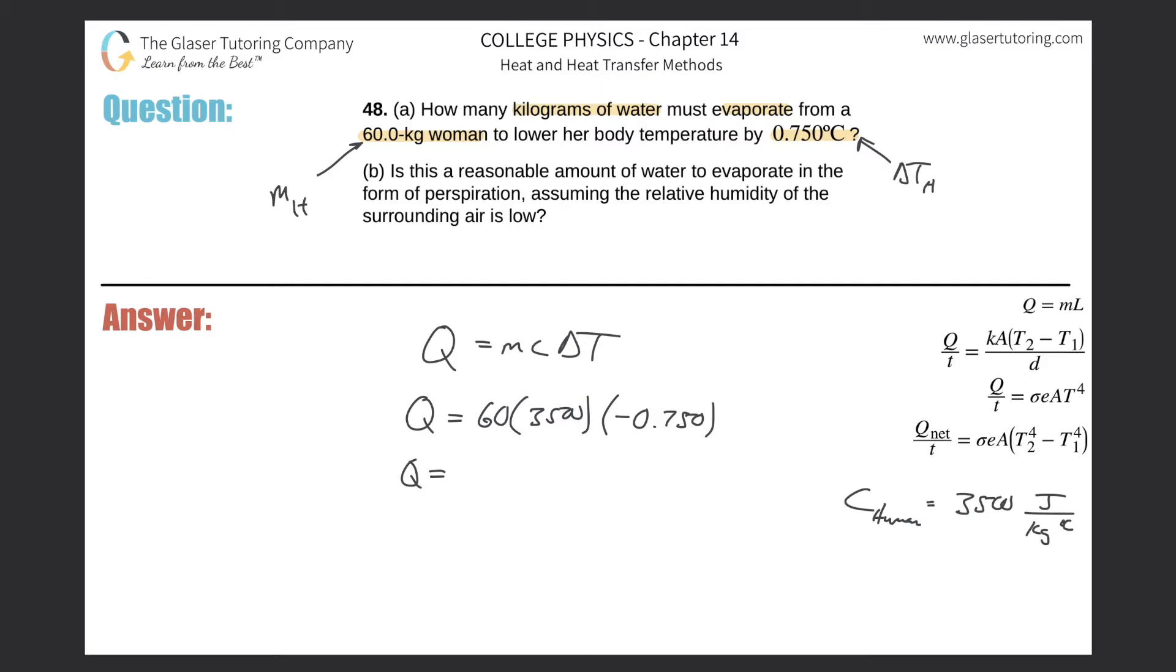So 60 times 3,500 times negative 0.75, just like there's no such thing as negative mass, right? Either you weigh something or you weigh nothing. All those physical quantities, there's either zero of it or there's something. So this is negative 157,500, and that is in terms of joules. So that's the amount of heat energy that's actually lost, okay?